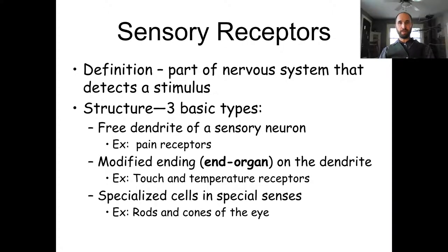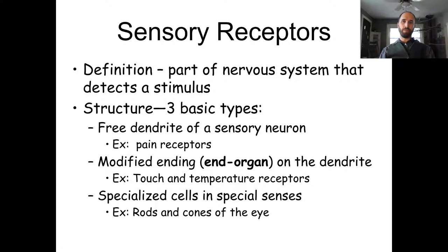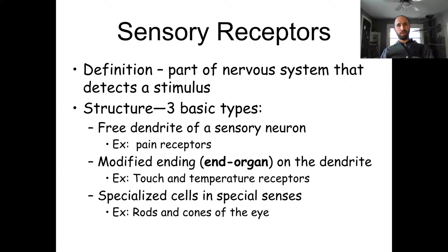We have a few different types of receptors structurally. We have free dendrites — just a sensory neuron with free dendrites that detects information. Nociceptors or pain receptors are a great example of that. We also have modified endings, often called corpuscles, in our skin to detect touch: Meissner's corpuscles are our light touch receptors at the surface of the skin, and Pacinian corpuscles are our deep touch receptors.